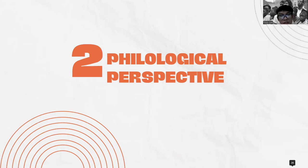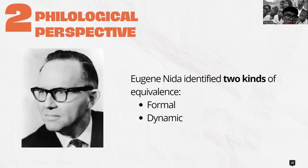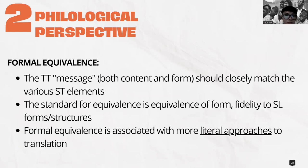So about the philological perspective, Nida has identified two kinds of equivalence in his theory: formal and dynamic. Formal equivalence is not in the sense of formal language; it's in the sense of language forms, not form-content distinction. His emphasis is on the language forms.